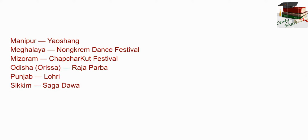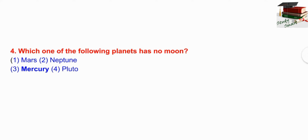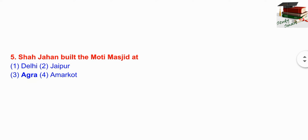Now see festivals about other states: Manipur — Yaoshang; Meghalaya — Nongkrem Dance Festival; Mizoram — Chapchar Kut Festival; Odisha — Raja Parva; Punjab — Lohri; and Sikkim — Saga Dawa. Next question: which one of the following planets has no moon? The right answer is Mercury.